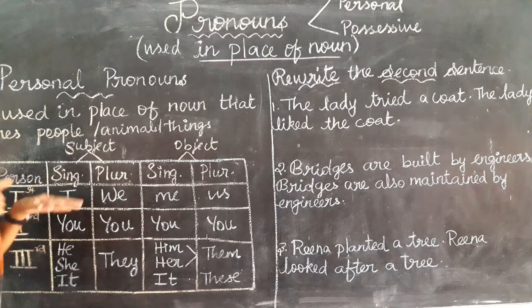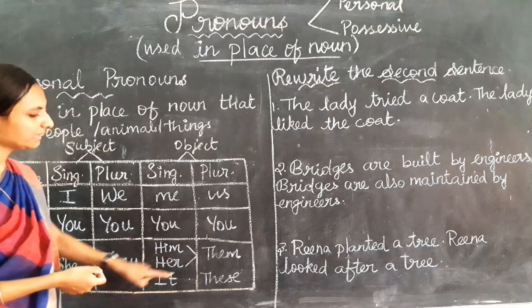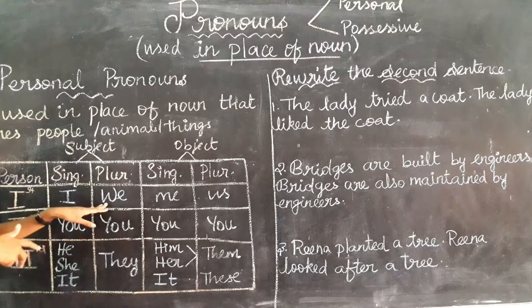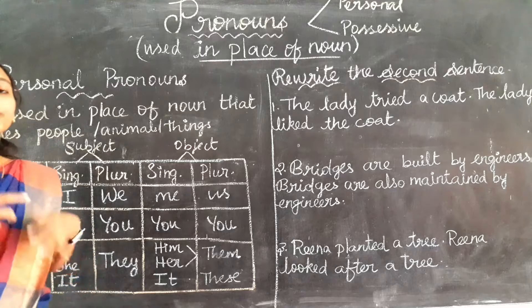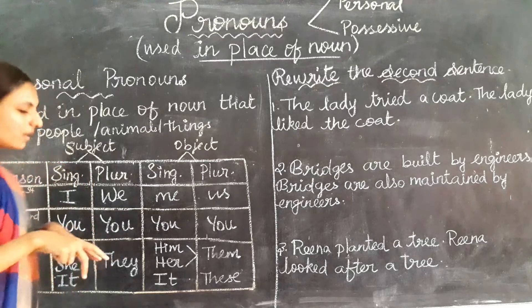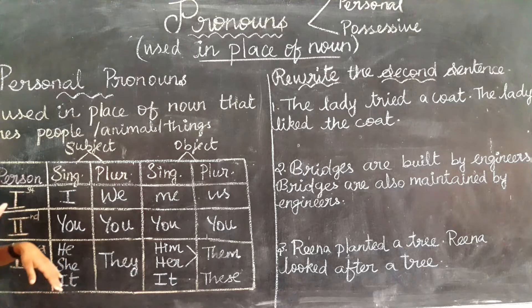These two columns — I, we, you, he, she, it, they — are all subject pronouns. Subject pronouns are used at the beginning of a sentence, in the place of the subject. And the pronouns me, us, you, him, her, it, them, this — these are called object pronouns. Object pronouns are used at the end of a sentence, in the predicate place.